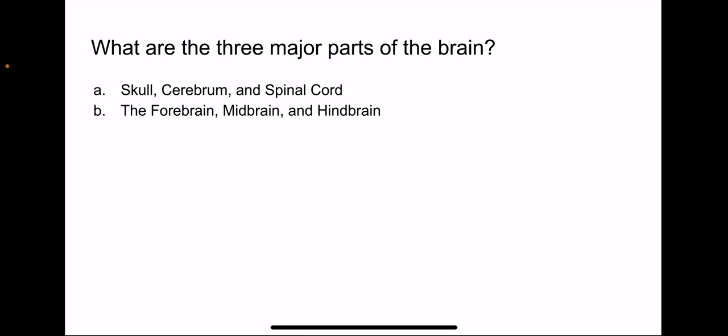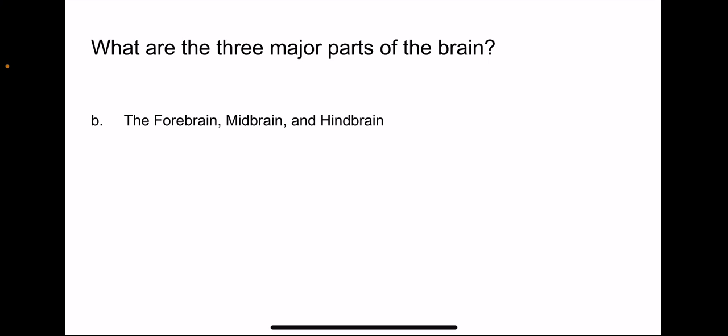Or sorry, second question. What are the three major parts of the brain? A. Skull, cerebrum, and spinal cord. B. The forebrain, midbrain, and the hindbrain. The correct answer would be B. The forebrain, the midbrain, and the hindbrain are the three major parts of the brain.